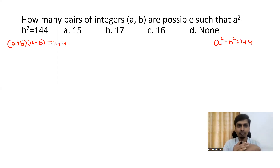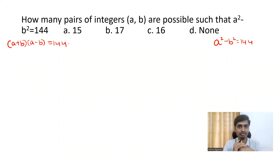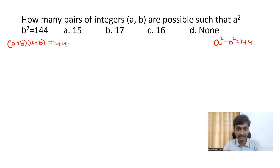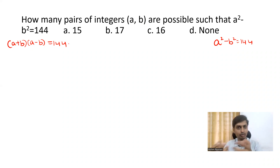When you multiply two numbers — A plus B gives you one number and A minus B gives you another — if you multiply both, you should get 144. You have to find all the possibilities available. The answer lies in factoring the numbers, prime factorization. For example, 1 times 144 gives 144, 2 times 72 gives 144. How many factors are available for the number 144?